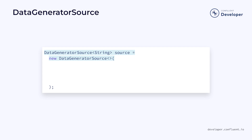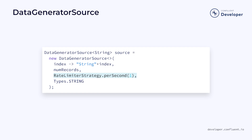Another useful technique for testing is to use a data generator source. This creates a source using a function that goes from an index value to another type — in this case, a string. Each time data is requested from the source, it will call the function. We can set limits on this so that it only produces a certain number of records, and we can also limit the frequency. Much like with the FROM ELEMENTS method, this technique has limited value in a production application.